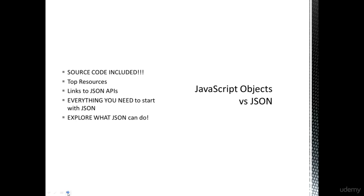Within the lessons of the course, after each lesson or after a set of lessons, I've included source code for you to try out and practice. I've also listed out the top resources and links to other JSON APIs — there are thousands of different JSON APIs available online. With the top resources I'm going to show you some of the most useful tools for building and structuring your JSON data. Everything you need is included within the course to start working with JSON.